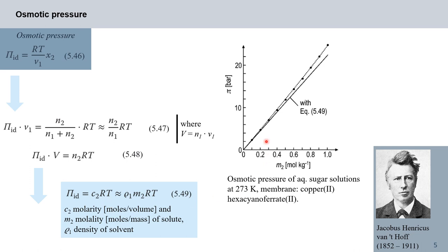The difficulty in these experiments using a Pfeffer cell lies in creating the semi-permeable membrane. Getting an impermeable wall is easy for large molecules but very difficult for small ions. Historically the major application of osmotic pressure was in the determination of molecular mass of macromolecules like sugars and larger species. For low molecular weight substances one can use copper(II) hexacyanoferrate(II) membranes, and for high molecular weight substances cellulose-based membranes are sufficient.